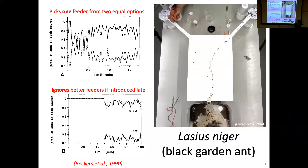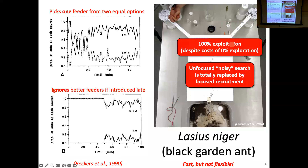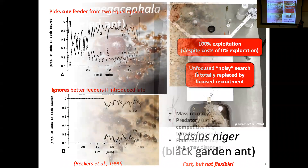So mass recruitment the way Lasius does it is really bad at tracking changes. But that's probably not a big deal for Lasius, because Lasius forages on flowers and dead arthropods — things that probably aren't going to go away, and sources that are pretty equivalent out there. There's not a sudden thing they need to attend to quickly or it'll disappear. They are 100% exploitation. The unfocused noisy search that starts the process is totally replaced by focused recruitment, and until that exploitation is over they basically don't go back to search.